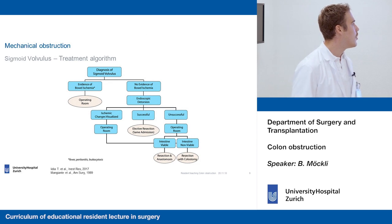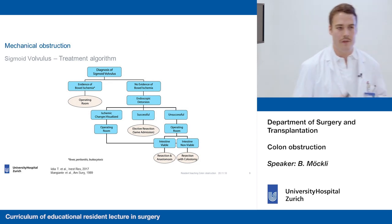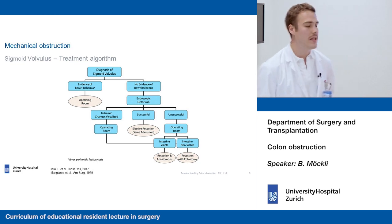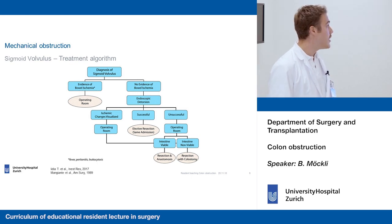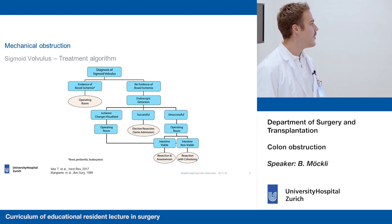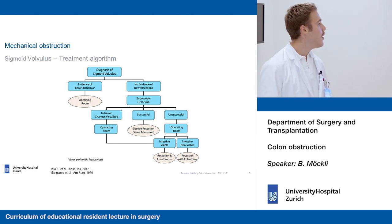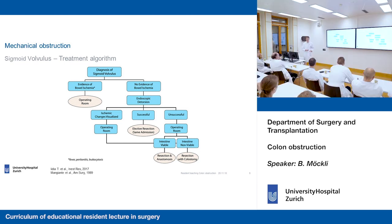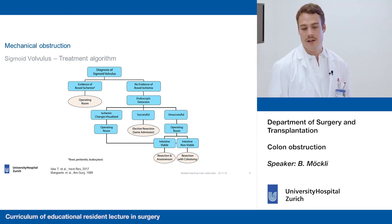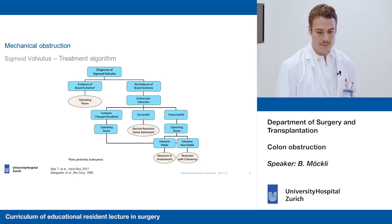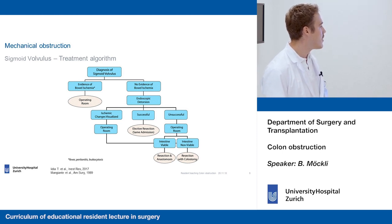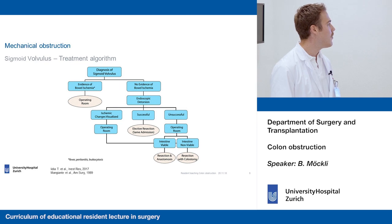The picture looks quite different for sigmoid volvulus — operative management may come at a later point. Once the diagnosis is made, if there is evidence of bowel ischemia, the patient needs to go to the OR. However, if there's no evidence of bowel ischemia, endoscopic detorsion can be attempted first. If successful, a rectal tube can be placed and the sigmoid is resected during the same admission in an elective or semi-elective setting. If there are ischemic changes on endoscopy, or if endoscopic detorsion is unsuccessful, the patient needs to go to the OR.